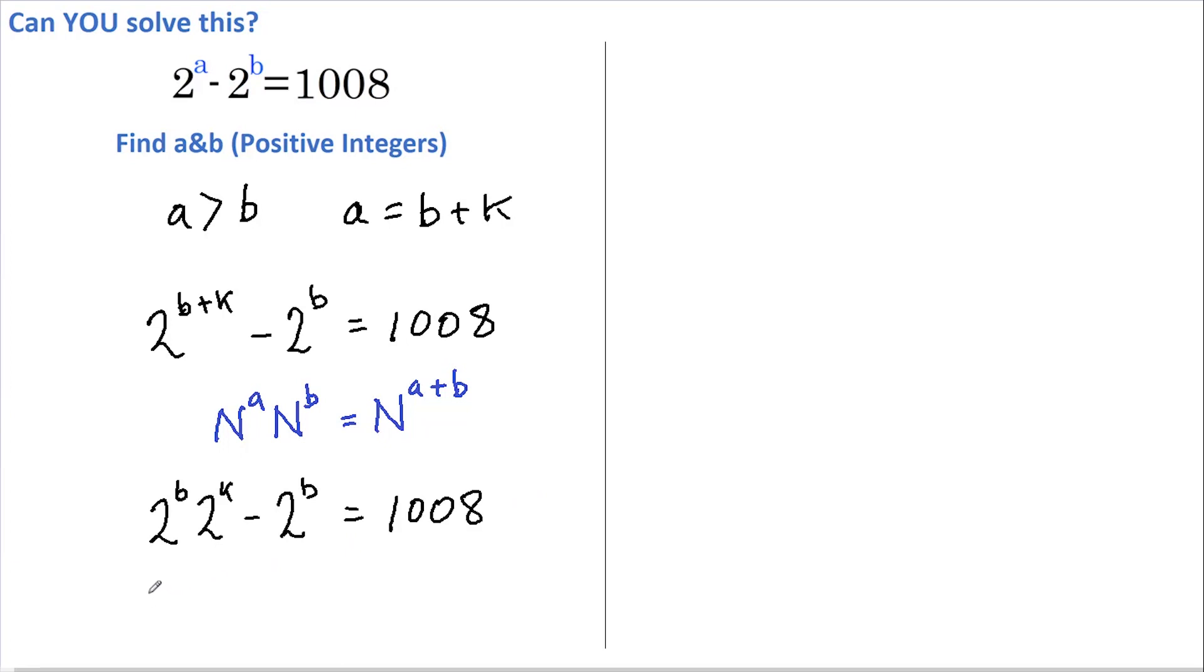This then allows us to factorize the left-hand side by pulling out 2 to the power of b, so we get 2 to the power of b multiplied by 2 to the power of k less 1, still equal to 1008. Now let's break 1008 down into prime factors.